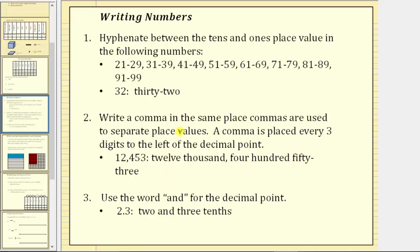Number three, we use the word "and" for the decimal point. For example, for 2.3, we say and write "two and three tenths." We should not use the word "and" except for the decimal point.